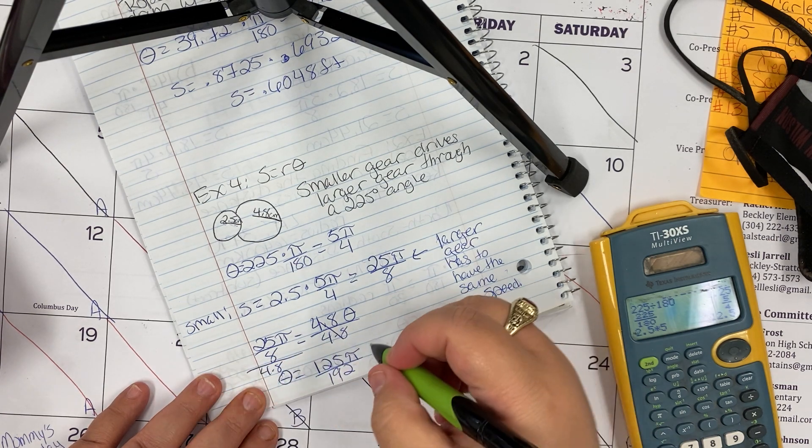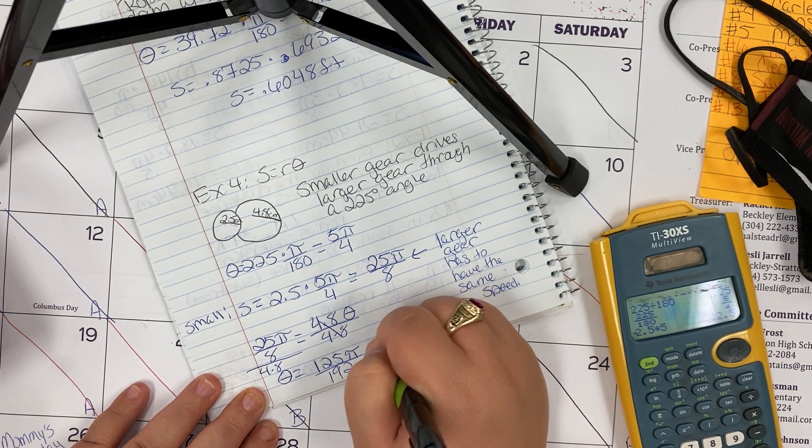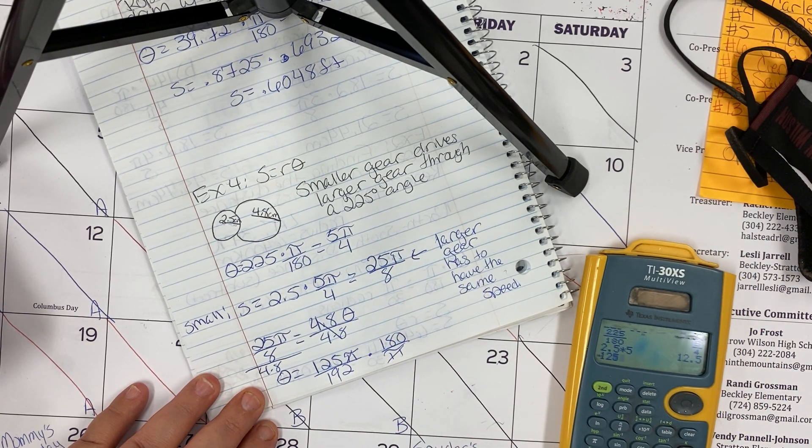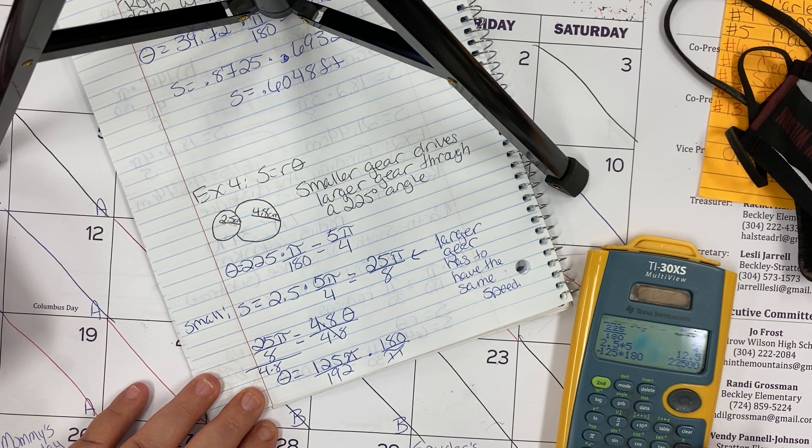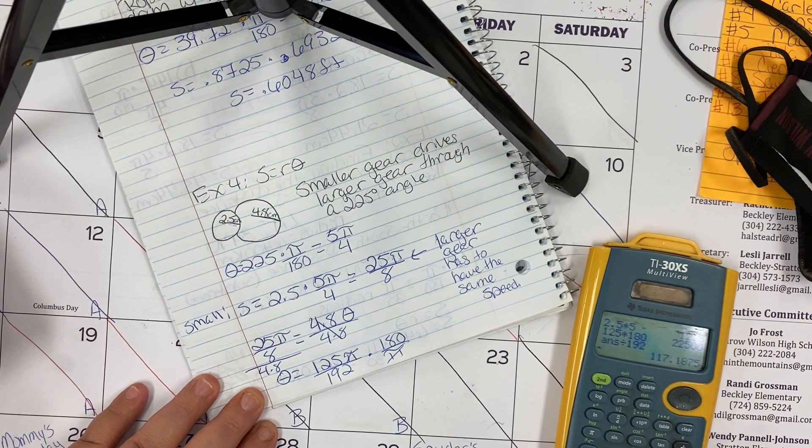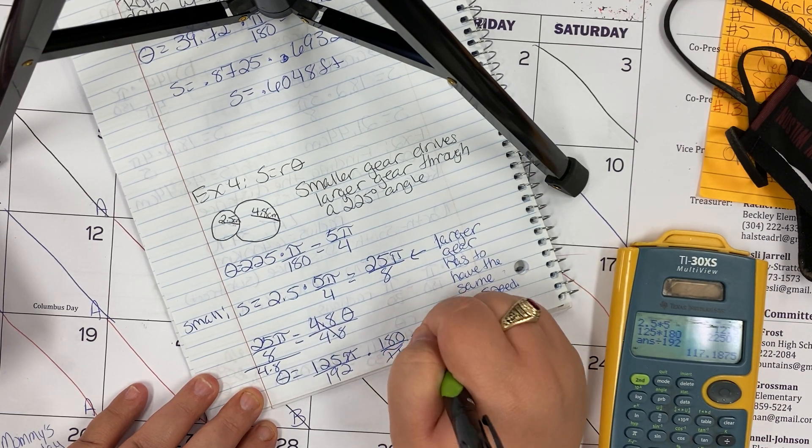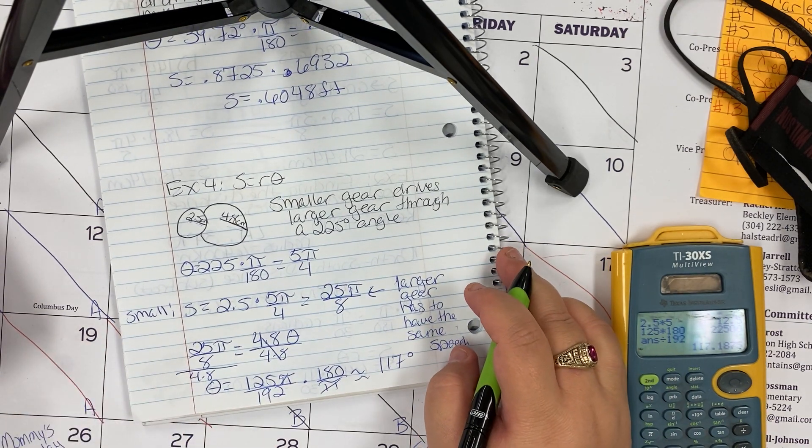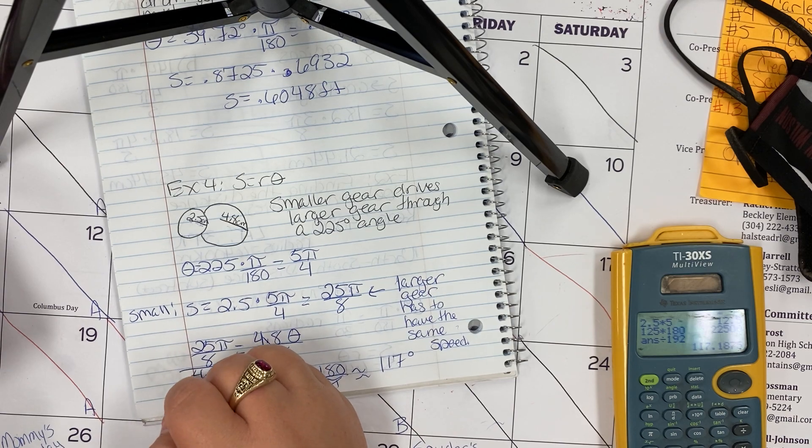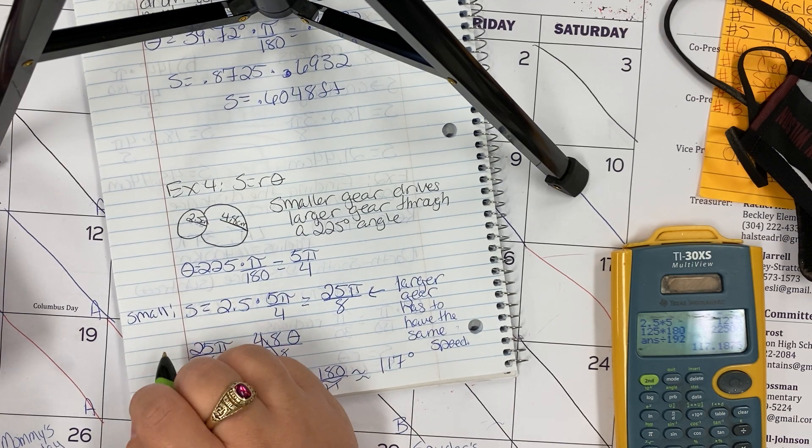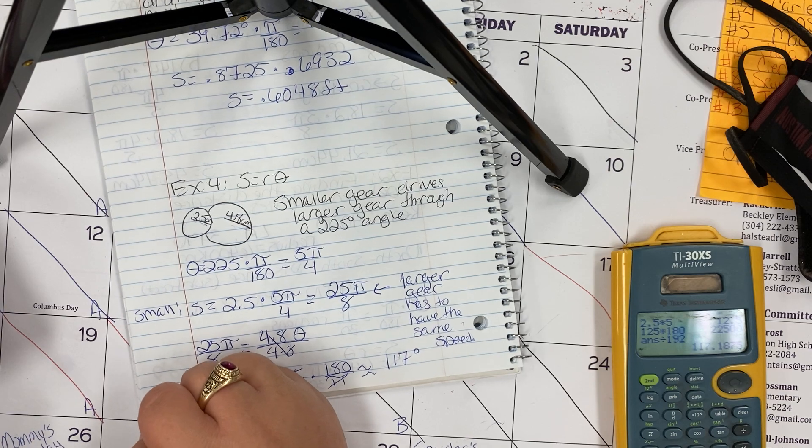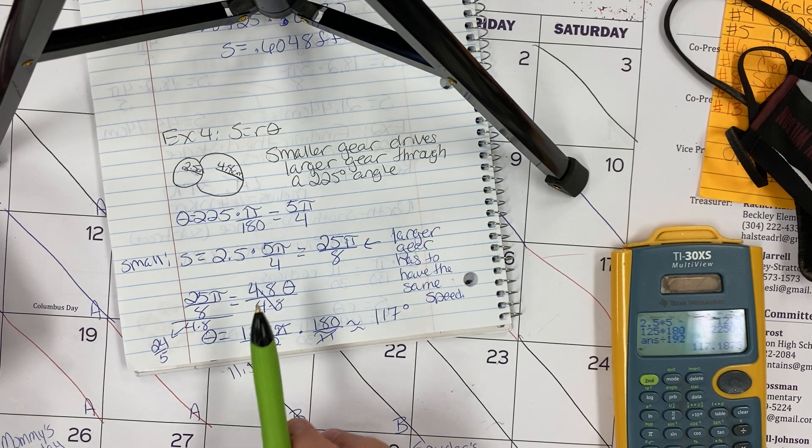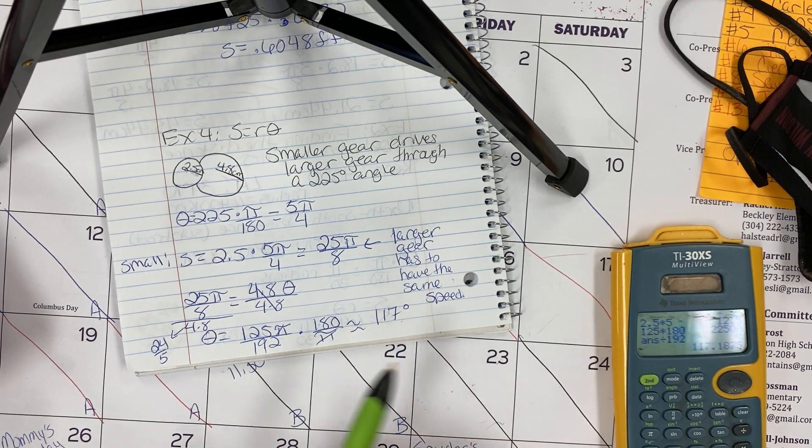We now need to convert that back to degrees, so I'm going to multiply that by 180 over π. Pies are going to cancel. 125 times 180 and divide that by 192, and it's going to be about 117 degrees. You can also say that 4.8 is 24 over 5 if you want to put that in fraction form, which will allow you to keep your fraction here, which will then allow you to easily convert to degrees.